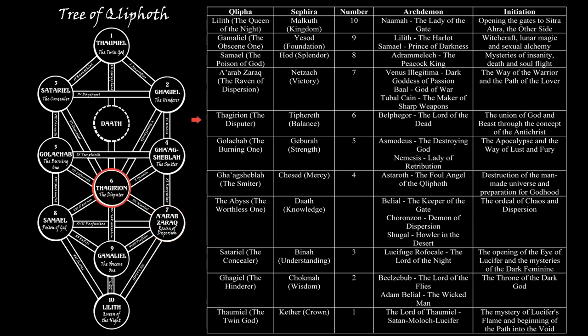The fifth initiation is that of Thagirion, the Disputer, which is the heart of the tree, also known as the Black Sun of Sitra Ahra. Its equivalent on the Tree of Sephiroth is Tiferet, Balance. The ruling demon god is Belphegor, the Lord of the Dead, and the initiation can be briefly described as the union of god and beast through the concept of the Antichrist. What it means in a practical way, you'll learn when you start working with this realm yourself.